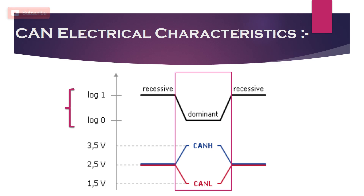Very important to note: when the bus state is made dominant or logic 0 by a node, it is electrically impossible to drive the state back to recessive by any other node. This piece of information will be used when we talk about bus arbitration.